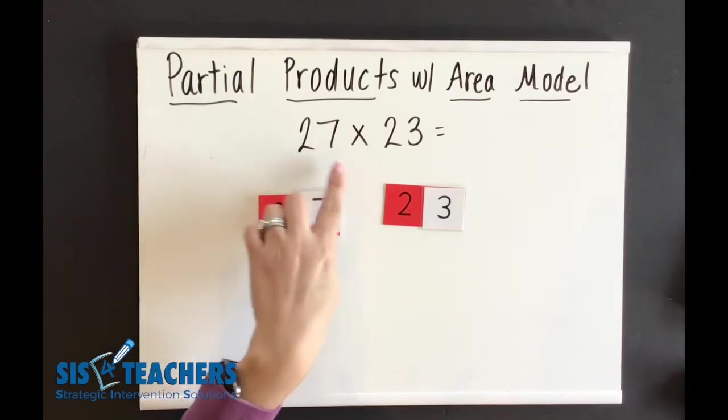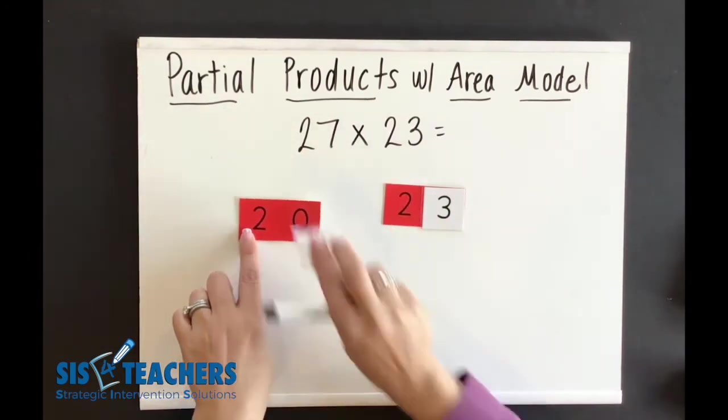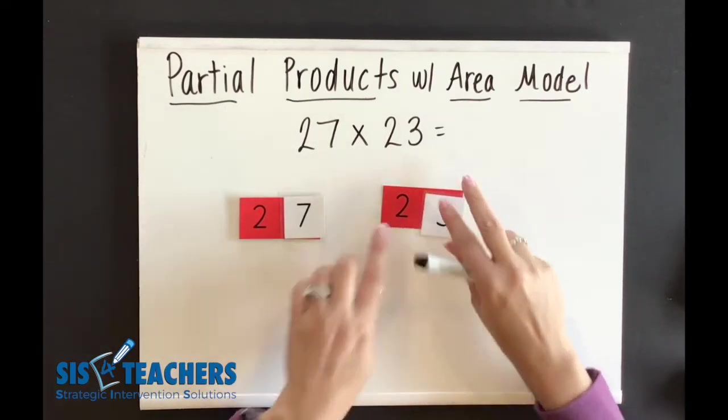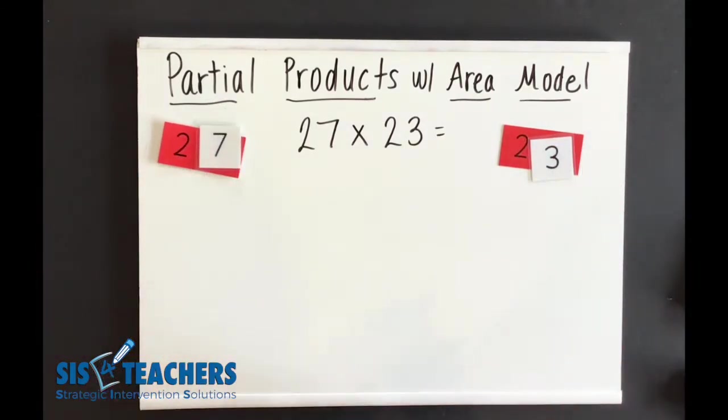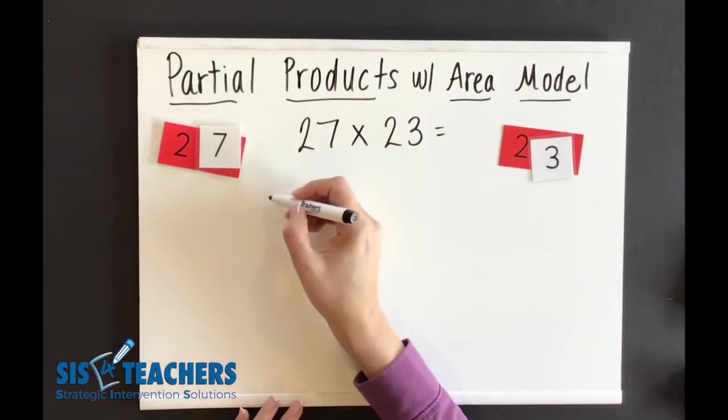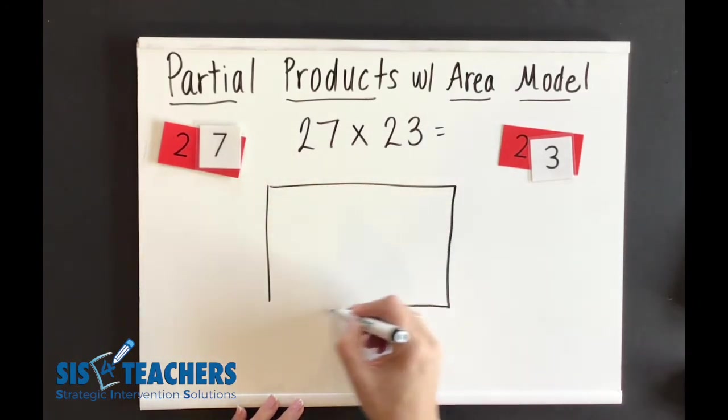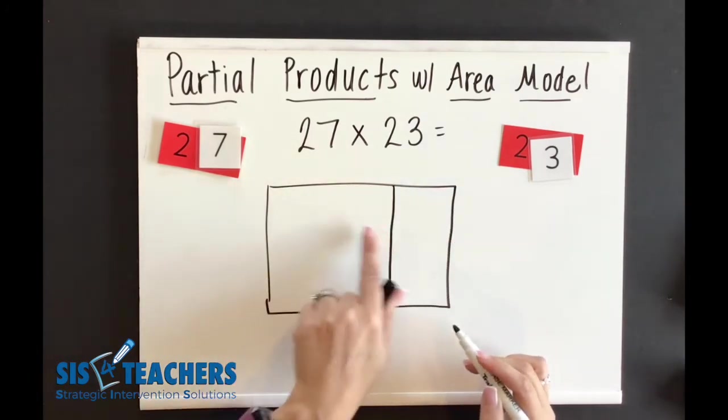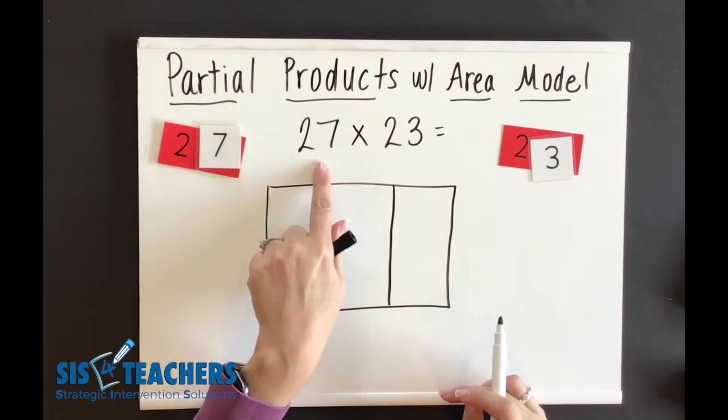If we looked at the number 27, it's made up of 20 and 7. If we look at the number 23, it's made up of 20 and 3. The reason why we're going to use an area box for this is going to help us to use some friendly multiplication facts that we might know. So I'm going to make an area box and I'm going to know that my tens are going to be a little bit larger than my ones. I'm going to make this spot on here. I know that I have tens and ones.